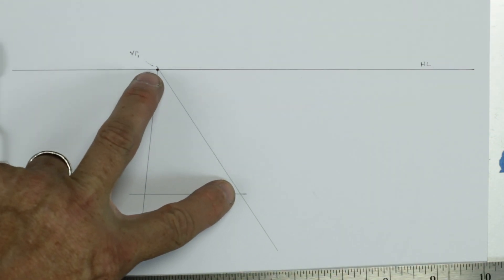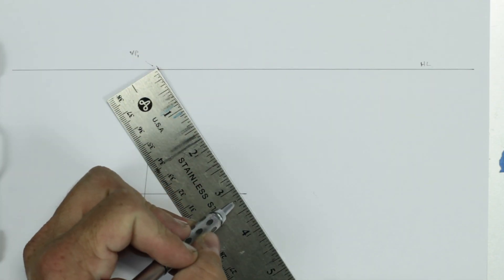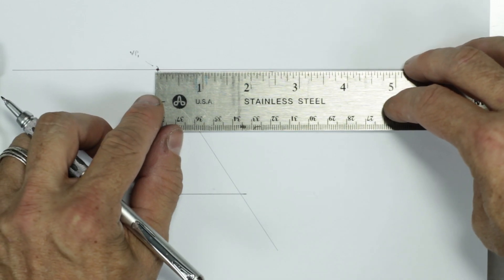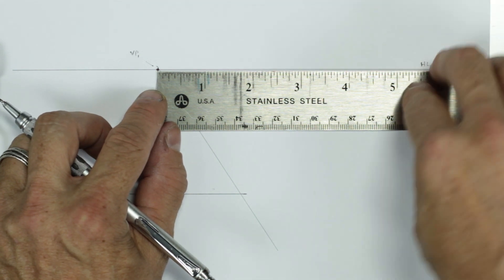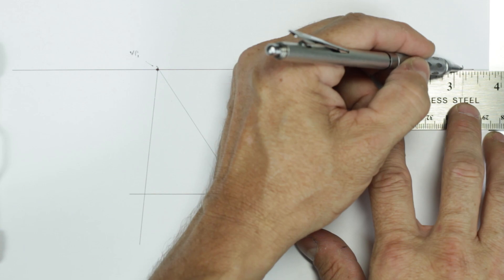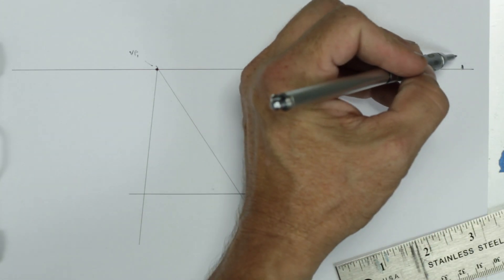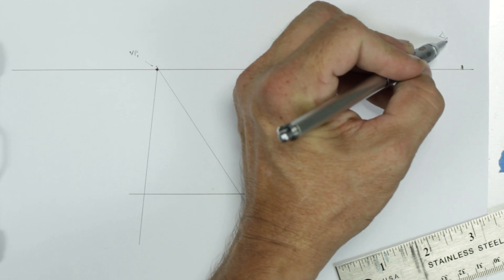And then I'm going to take this length right here. I'm going to measure it. Hopefully this will fit on our page. Go back to the vanishing point and measure this out twice. Once, twice, and this is the point that we're looking for over here. That's called our diagonal measuring point, DMP.